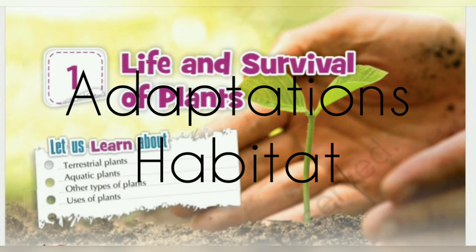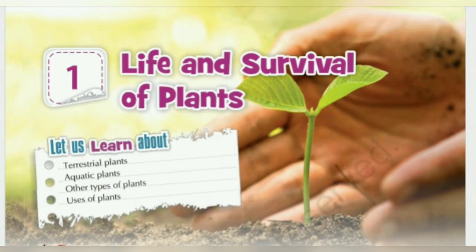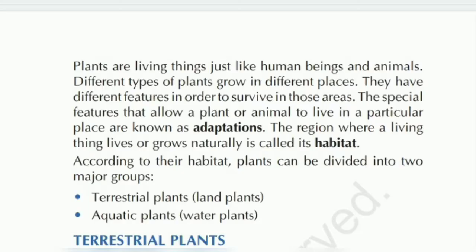So adaptation ka matlab kya hota hai — adaptation matlab jho special parts hote hain jo animal ke body mein hote hain, uski help se uska life easy hota hai. Usko madad karte hain uske climate mein, uske landscape mein, achi tarah jeene ke liye. Woh animal ko jo special parts help karte hain, that is known as its adaptation.